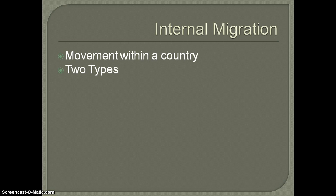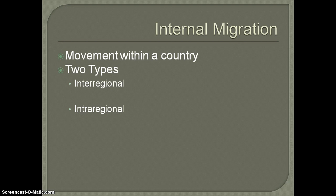When we talk about internal migration, there are two main types that we refer to. We have what's called interregional and we have intraregional. Interregional is movement that happens between regions, and depending on what country you're talking about, there are going to be different regions represented. In the United States we can talk mainly about the north, the midwest, the south, and the west.